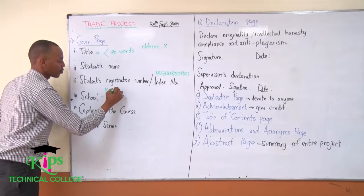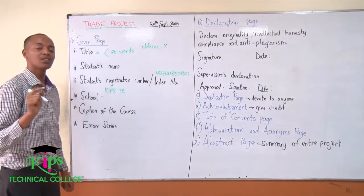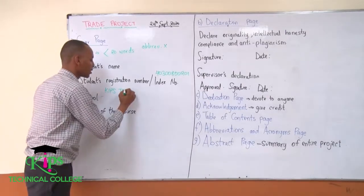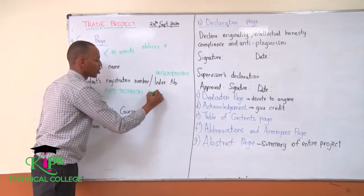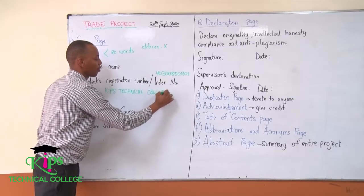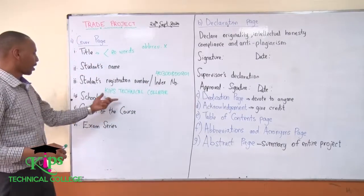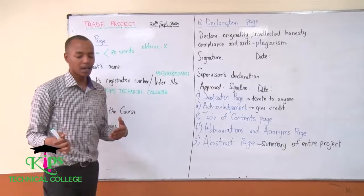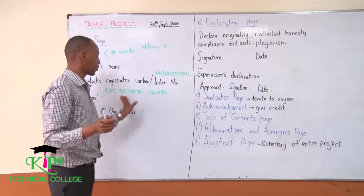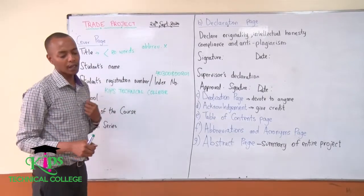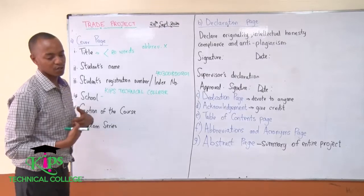You have to write the full name of the school — in our case, KCB Technical College. You have to state the name of the school. You may have different departments, but first put the name of the school. Under that, you have to give a caption of the course.